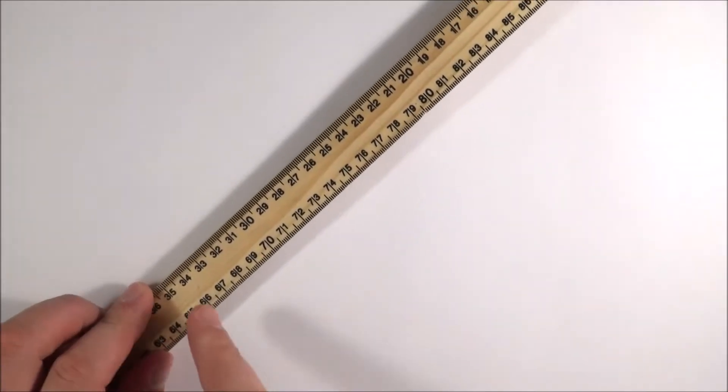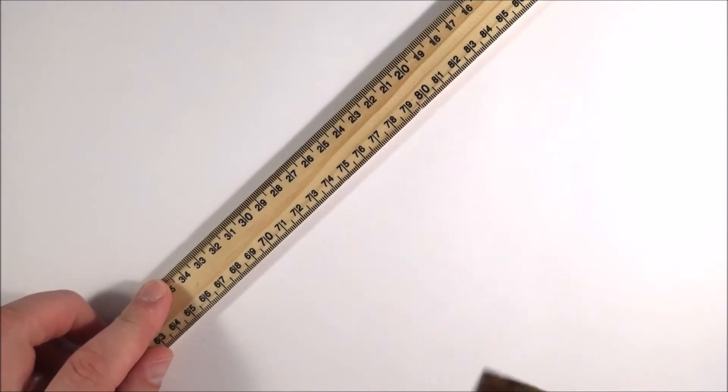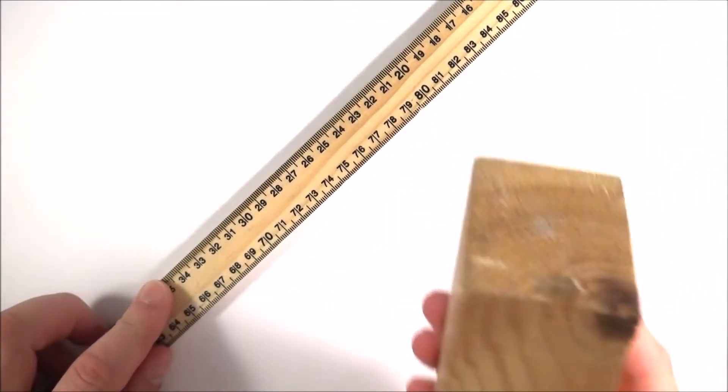Now some items that every physics lab will have include meter rulers, often a bit more bashed up than this one because they're used as swords by teachers as well, and also blocks of wood because they're cheap and kids can't break them.